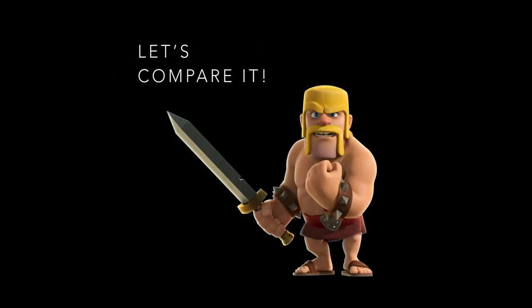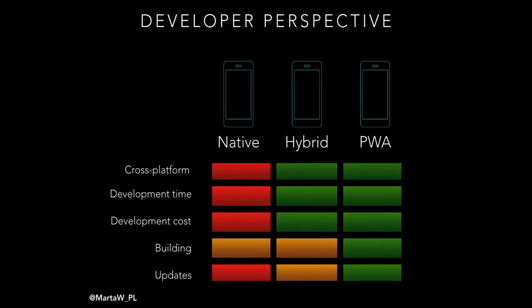Now let's compare them across three aspects: developer perspective, user perspective, and access to native features. From the developer perspective, the most important feature is being cross-platform: hybrid apps and PWA are great here, native apps are not. Development time and cost are worse for native apps. For the build process, PWA has only one build for all platforms; hybrid apps depend on the platform, same as native apps. If you want to update your app, for PWA you change it once, build once, and deploy to the remote server. For hybrid apps, you change it once, then build for each specific platform and install on devices. For native apps with two platforms, you must change both codebases, rebuild, and reinstall.